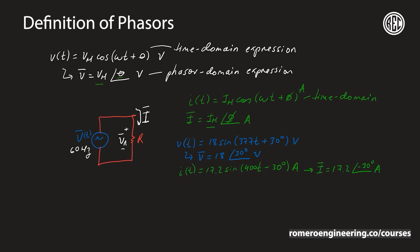I've said it a couple of times, but I'm going to repeat it because it's very important: when we go from the time domain to the phasor domain, we drop the frequency out of the expression because all of the components in the same circuit are going to have the same frequency for both voltage and current. The phasor domain expression doesn't tell us what the frequency is, but we know that if the source operates at a certain frequency, the voltages and currents throughout the rest of the circuit will have that same frequency. That's why it's very helpful to use the phasor domain expression.